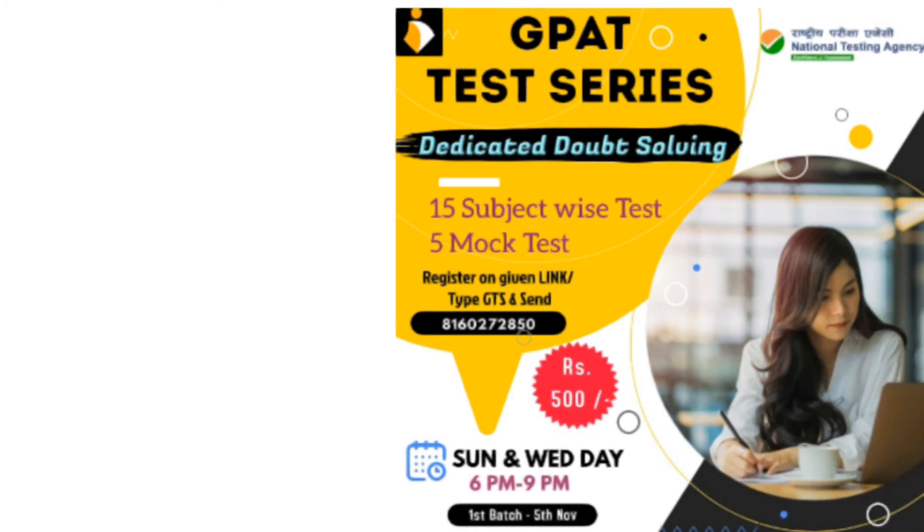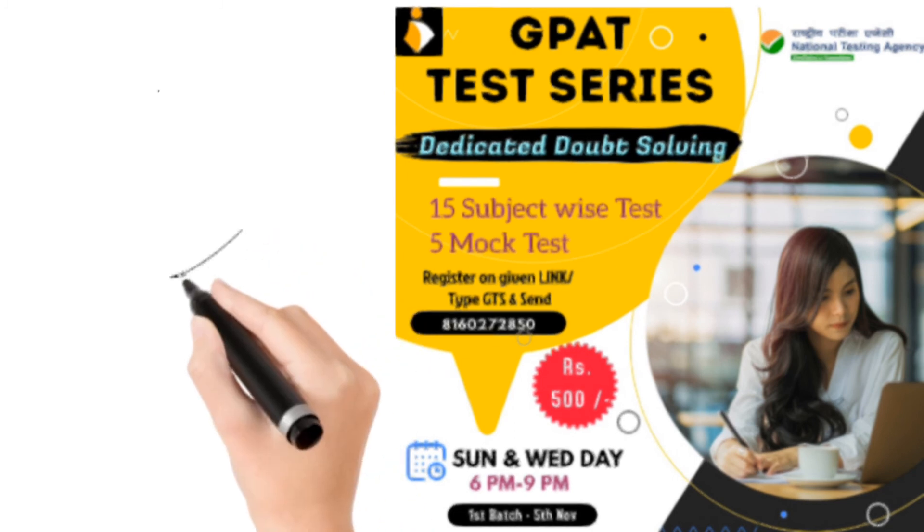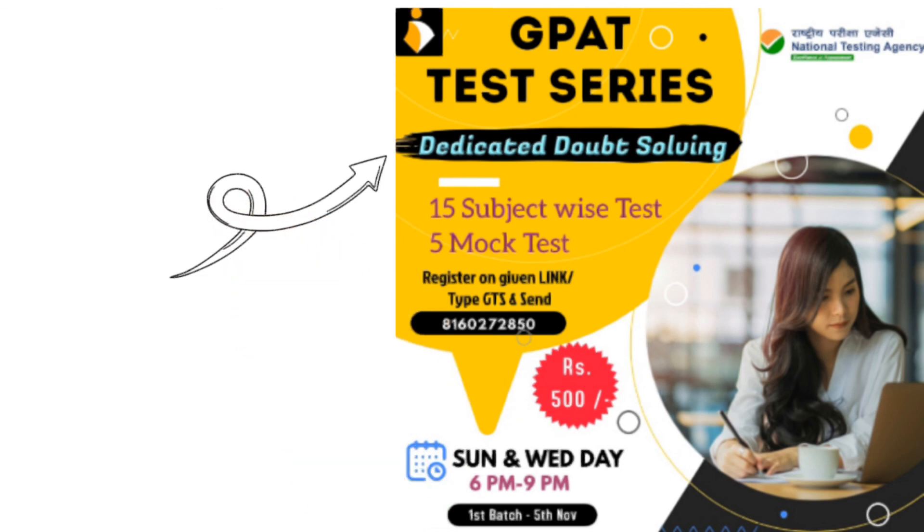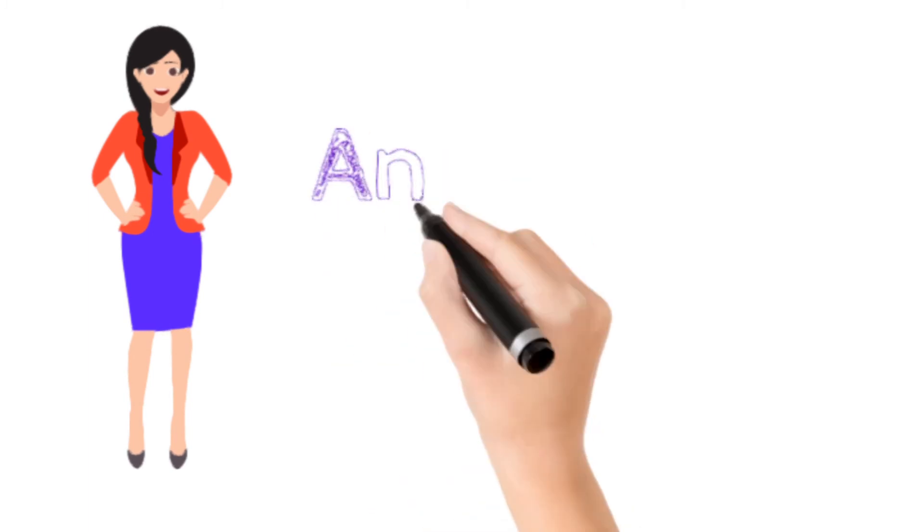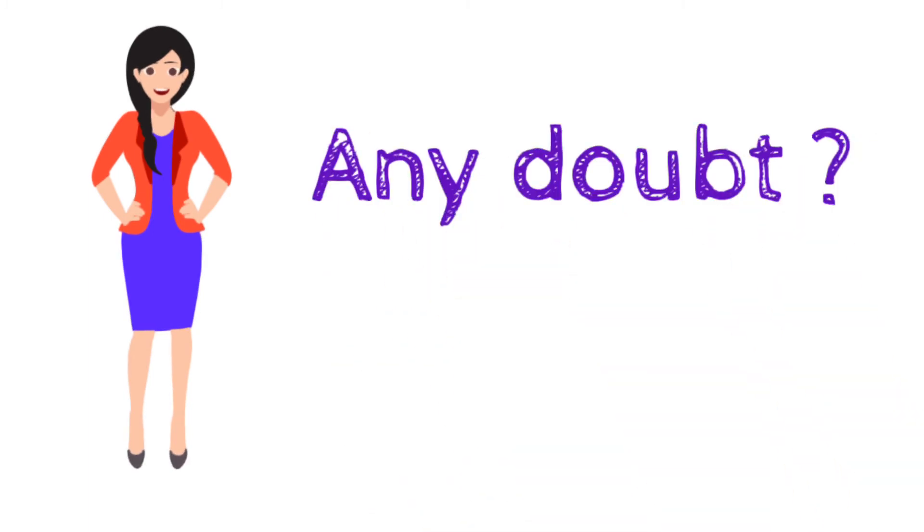Here are the details of that GPAT series. It is dedicated for doubt solving. Your study might be done, but you will have some doubts, so it will get solved in this test series. Here is the phone number also mentioned. You can contact on that number. For Sunday and Wednesday, you can contact 6 to 9 PM. First batch has also started. Registration is free, but after registration you have to pay 500 rupees for the whole test series. Any doubt, you can ask us on our Instagram, WhatsApp, or our Telegram group. If you have any doubt in lectures, you can also ask on those groups.